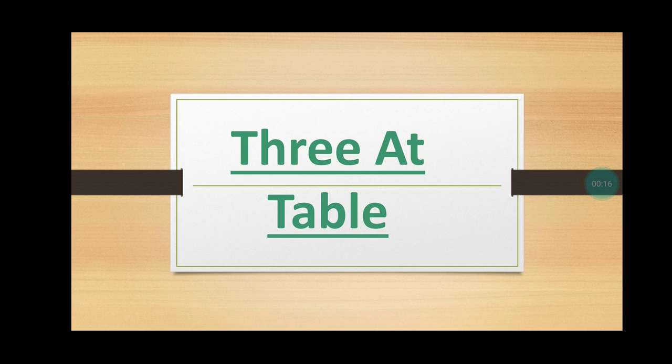Hello students, good afternoon to all of you. Today we are going to discuss a chapter and the name of the chapter is Three at Table. Three at Table means there are three persons who are sitting at a table. Whenever we sit with our friends or anyone at a table, there goes a lot of discussions. Here we'll study that there were three friends who were sitting at a table and they were discussing about something.